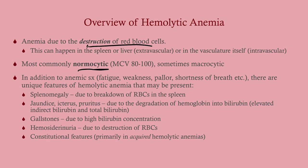In addition to the anemic symptoms, you can see features primarily related to elevated bilirubin. When hemoglobin spills into the bloodstream it gets broken down and bilirubin is one of the products, so you can get jaundice, icterus, and pruritus. You can also get gallstones due to bilirubin saturation, hemoglobinuria, and splenomegaly as red blood cells get trapped in the spleen.